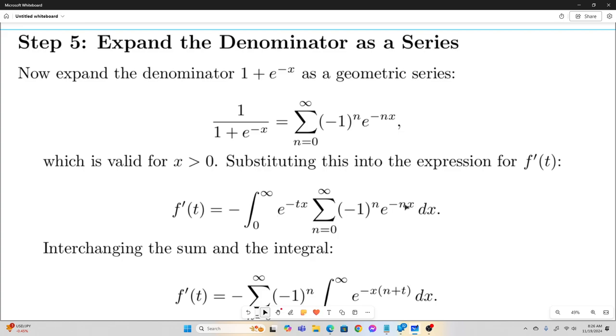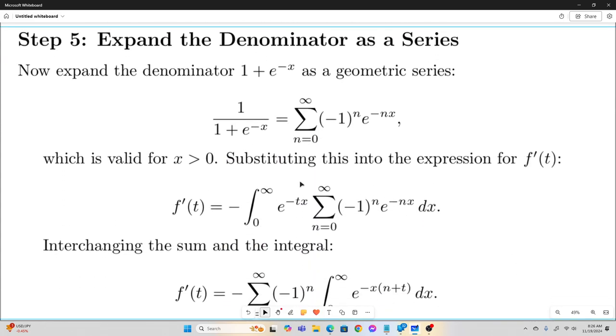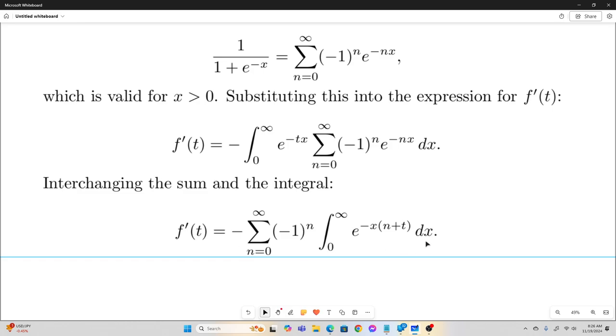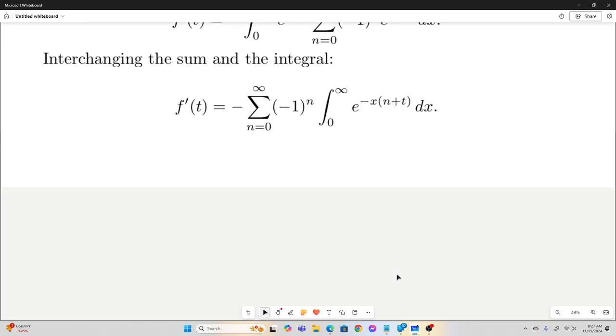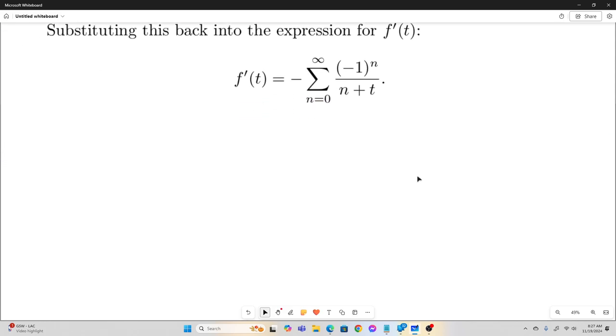So now we just substitute that back in for our expression for f prime of t, giving us this. And then we interchange the sum and integral, which is justified in this case. It's not going to cause any problems with convergence or anything. This integral does converge. And then we just evaluate that integral. That integral evaluates to 1 over n plus t. So, substituting this back into our expression for f prime of t, we see that f prime of t is just negative sum as n goes from 0 to infinity of negative 1 to the n over n plus t.